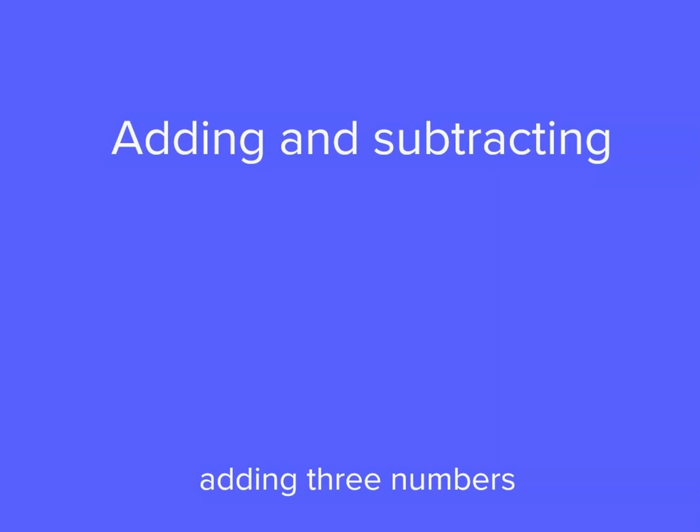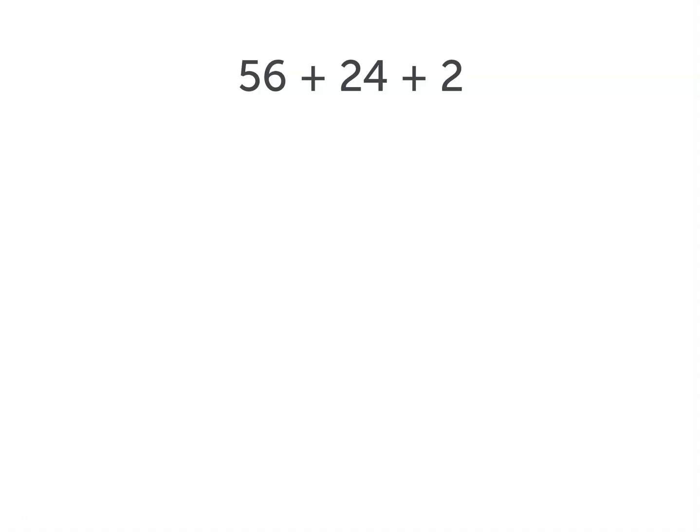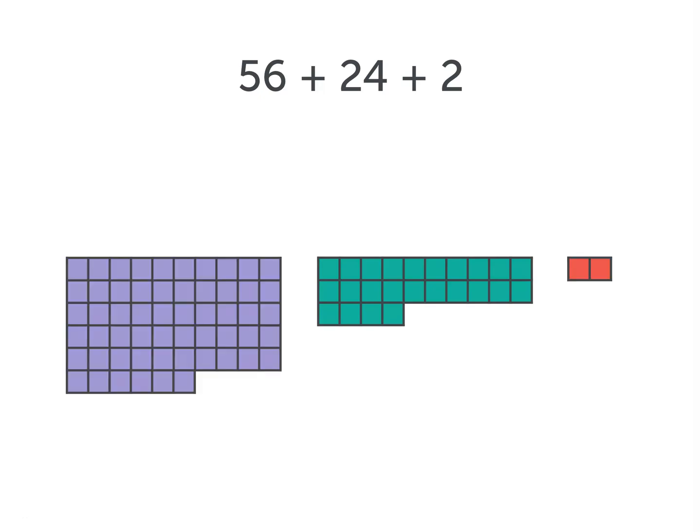Let's apply some strategies to add three numbers at a time. We'll start by adding 56 plus 24 plus 2. Here they are represented in tiles.